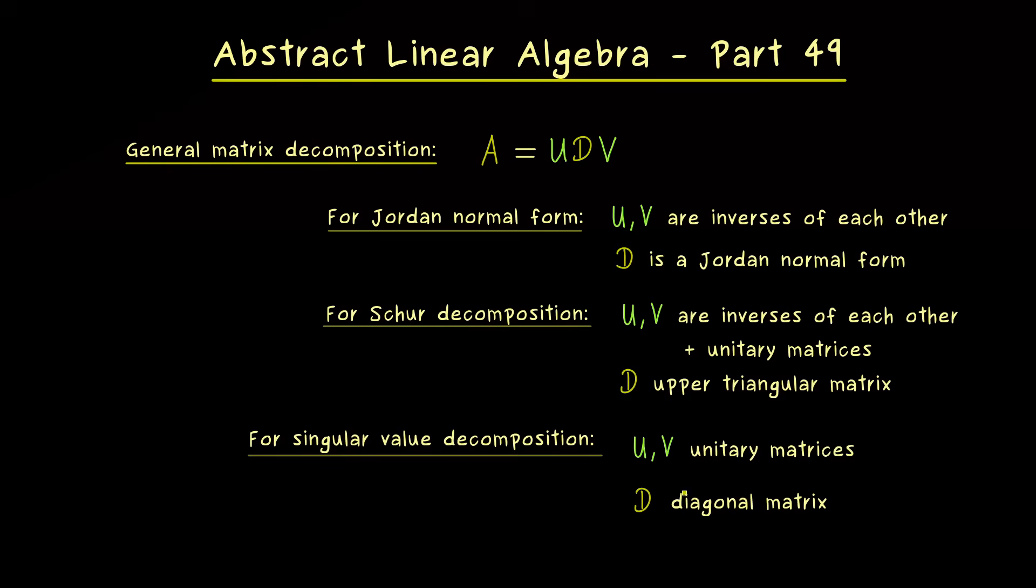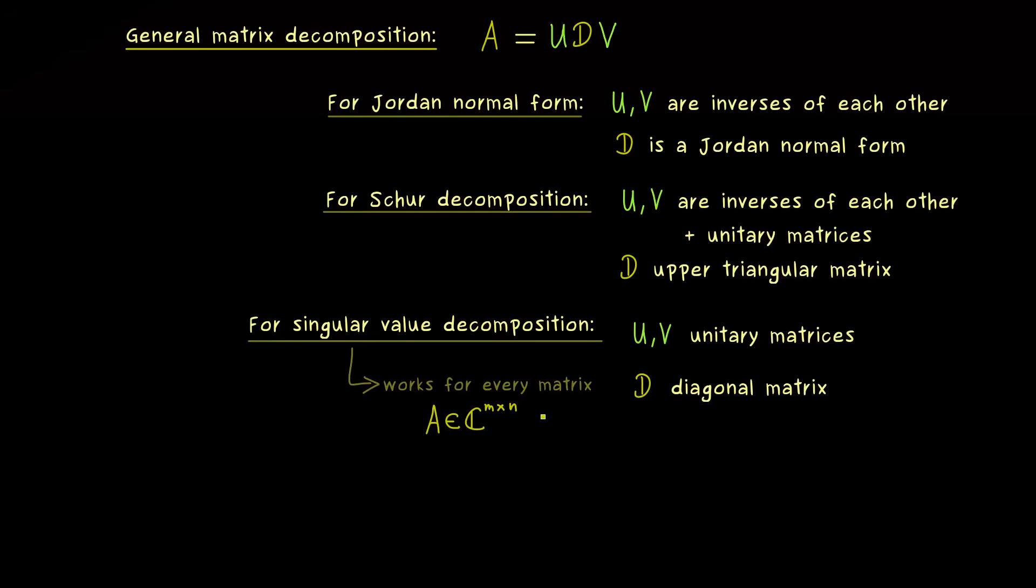And moreover, it turns out that we can also keep the property of the Schur decomposition, which means that U and V can be chosen as unitary matrices. So these two things together make the singular value decomposition what it is. We transform with unitary matrices and we transform to a diagonal matrix. And since we don't have any connection between U and V anymore, we can even transform rectangular matrices. So we can simply say, this works for any matrix A with m rows and n columns. So you see, this makes this decomposition very versatile, because we don't need any assumption for our matrix A.